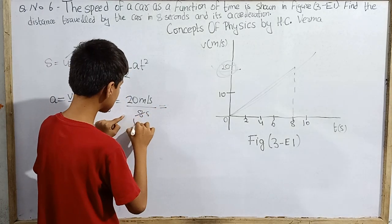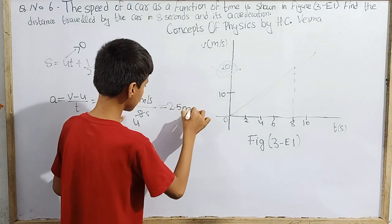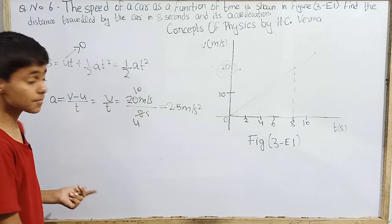The acceleration is just, you can be trying cancelling 4 and 10, which is 2.5 meter per second square.